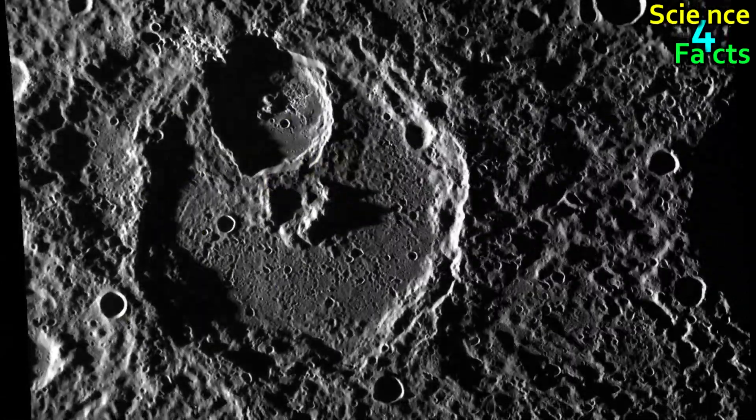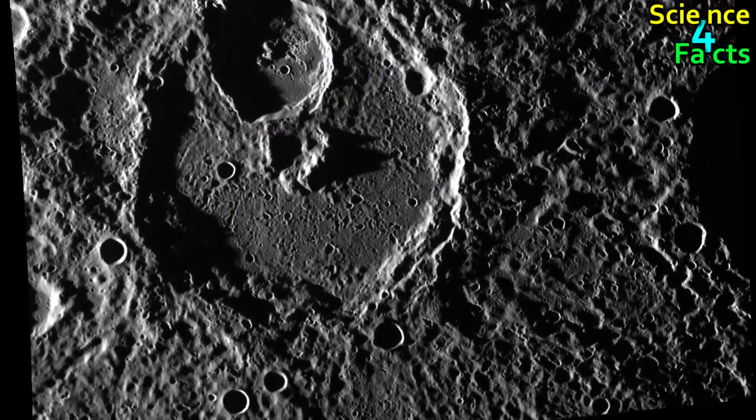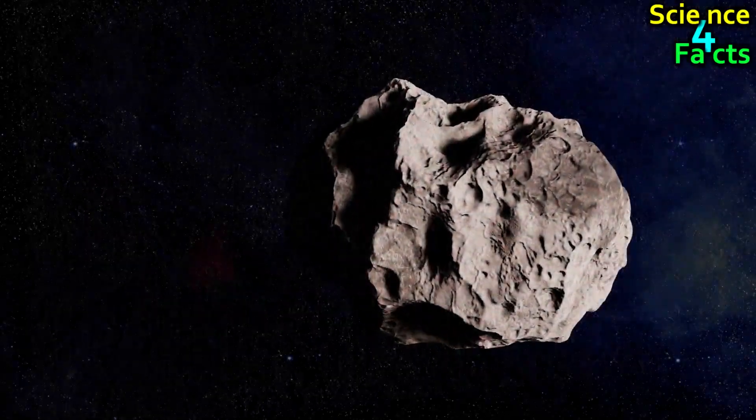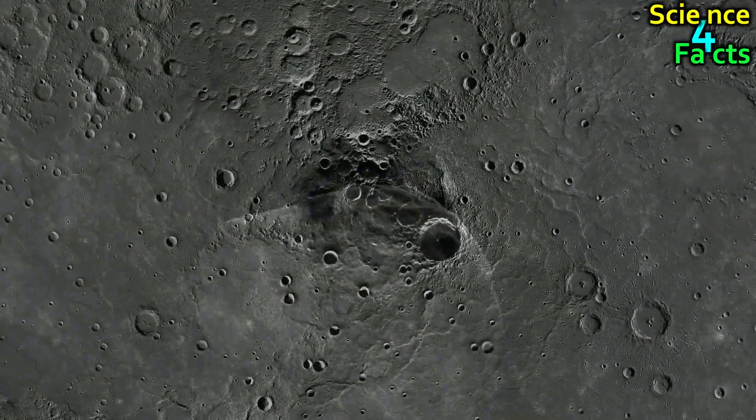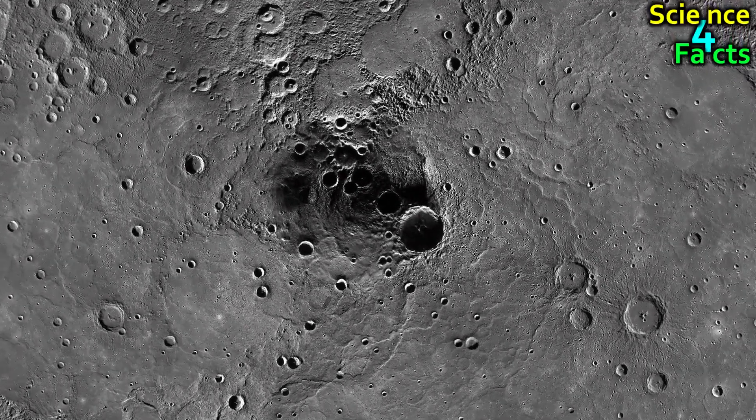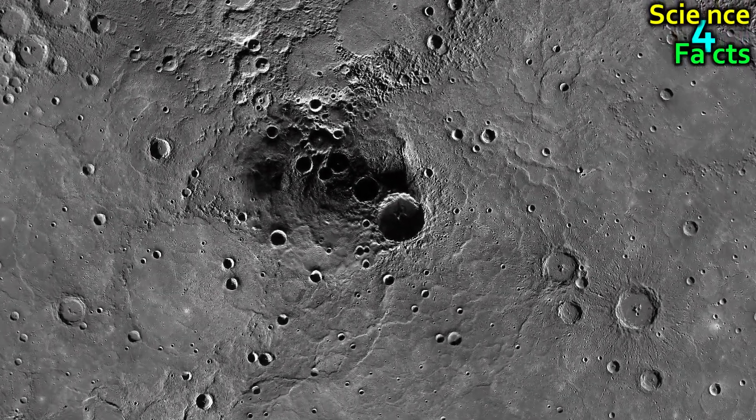The surface of Mercury is heavily cratered, indicating that the planet has been bombarded by meteoroids and asteroids over the course of its history. These impact craters can vary in size from small, shallow depressions to large, deep basins.